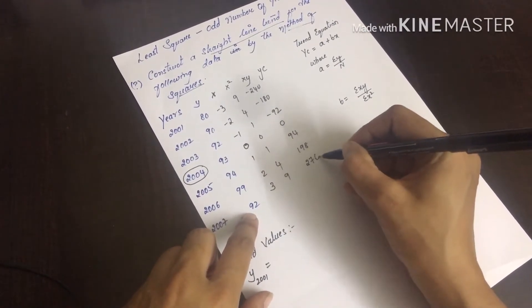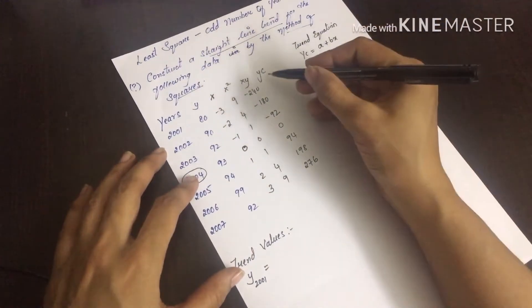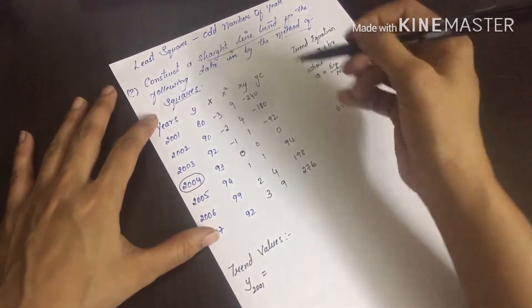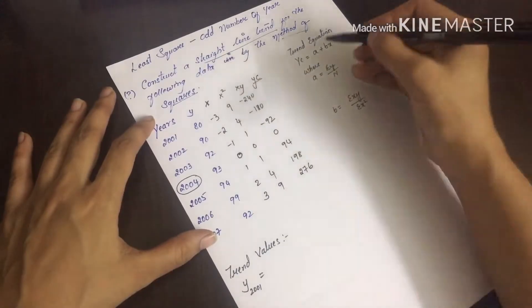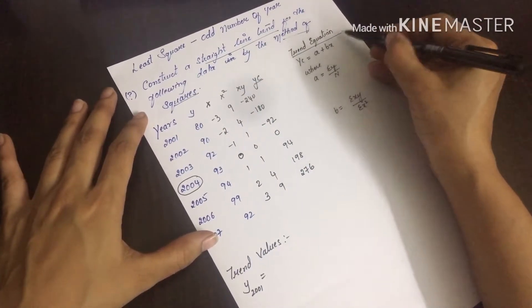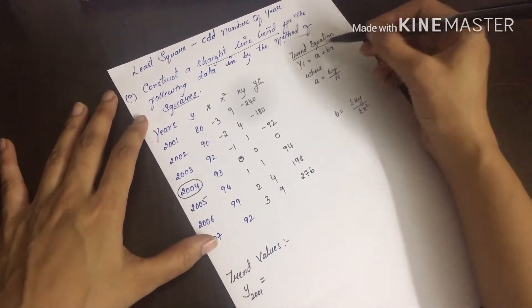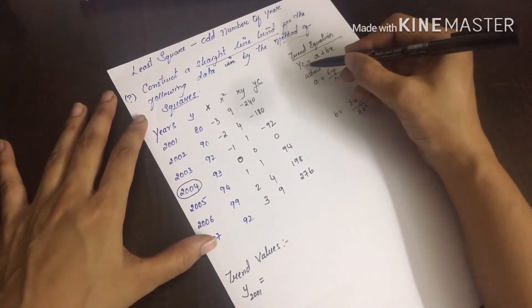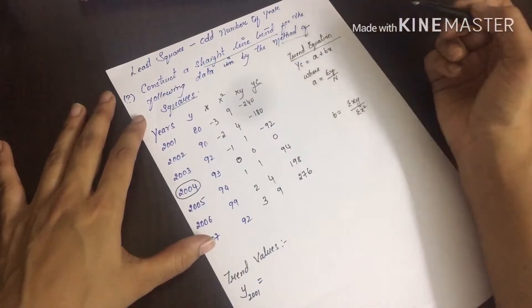Now how to calculate yc? This is the trend equation. Yc is equals to a plus bx. The trend equation formula is yc equals a plus bx.